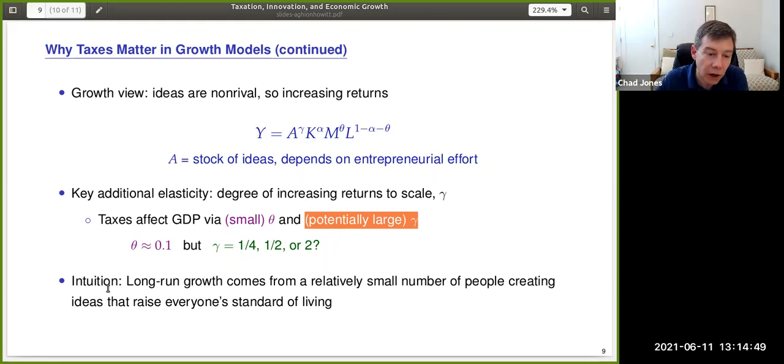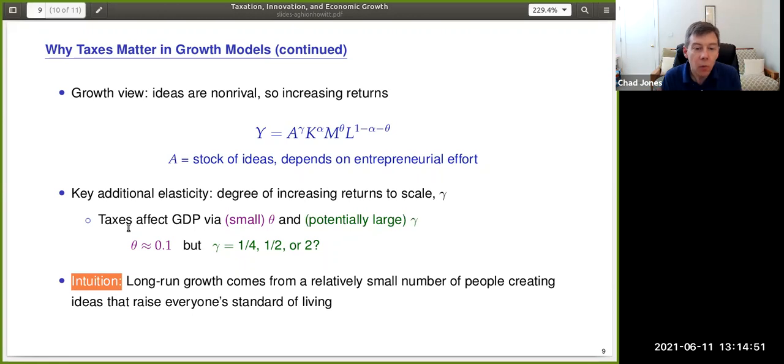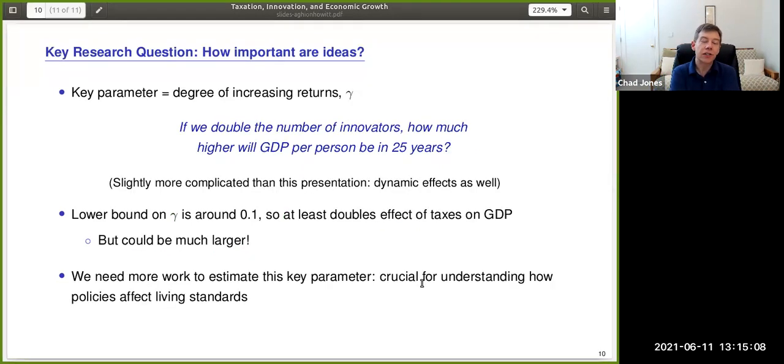What's the intuition for these larger effects? Well, what we learned from growth theory is that long-run economic growth comes from a relatively small number of people creating ideas that raise everyone's living standards. Those ideas are non-rival. And so they really get amplified a lot across people's incomes.